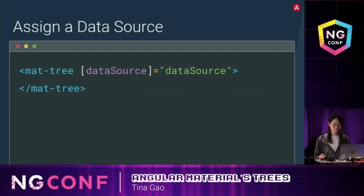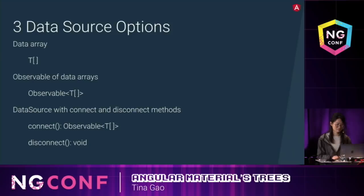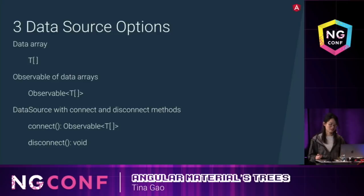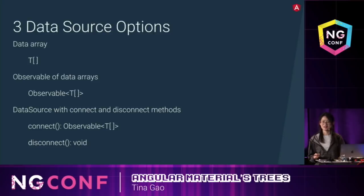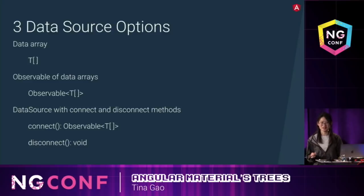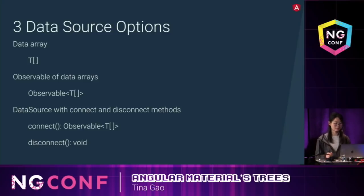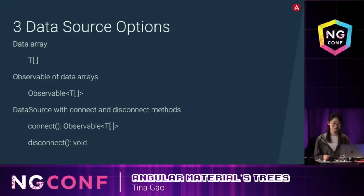We can assign the data source to the tree in the template. There are three data source options: it can be a data array, it can be an observable data array, or it can be a data source with connect and disconnect methods. The connect method returns an observable data array. If you have used a data table in Angular Material or Angular CDK, you'll be familiar with this kind of data source. Here in tree, each item in the data array represents a tree node, and it can be nested or flattened. But for flat tree, it needs to be flattened before it fits the tree.